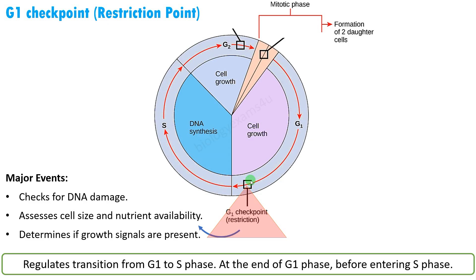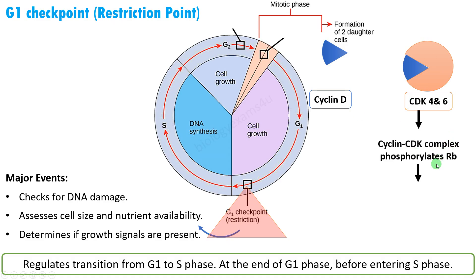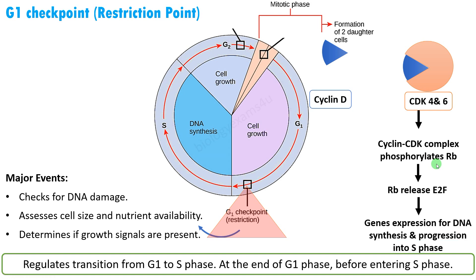If everything is fine, this checkpoint allows the cell to progress to S phase. The cyclins primarily involved are cyclin D and CDK4 and CDK6. Cyclin D binds to CDK4 and 6, forming a cyclin-CDK complex essential for transition from G1 to S phase. Once activated by cyclin D, this CDK complex phosphorylates Rb, and this phosphorylation leads to the release of E2F, a transcription factor that promotes gene expression necessary for DNA synthesis and progression into S phase.